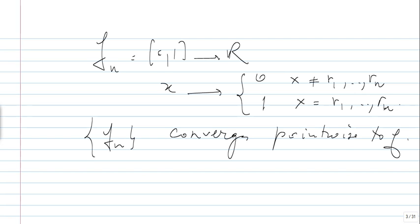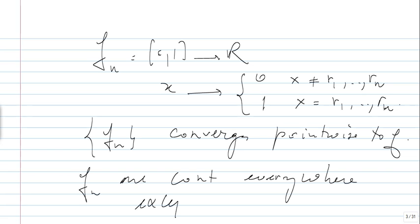Of course, the Fₙ's are continuous everywhere except at r₁,...,rₙ. So the number of points where Fₙ is discontinuous is finite. These Fₙ's are very nice from the point of view of many properties, but the limit F is extremely bad. We know that F doesn't have a limit anywhere, is not Riemann integrable, etc.